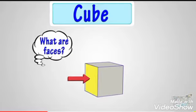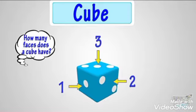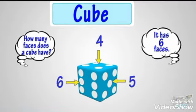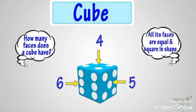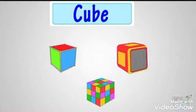Flat surface is called a face of cube. And how many faces does a cube have? It has 6 faces. And all its faces are equal and in square shape.